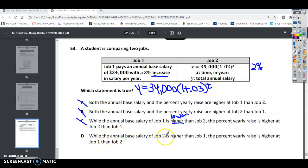While the annual base salary for job 2, the annual base salary is 35, so it is higher than job 1, so this checks out. The percent of yearly raise is higher for job 1. Job 1 is 3%, higher than job 2, so that checks out. So D is the correct answer. So for number 53, your answer is D.